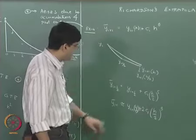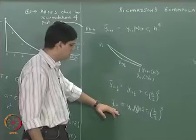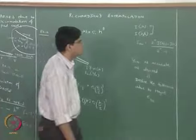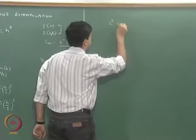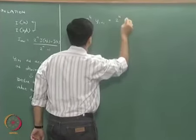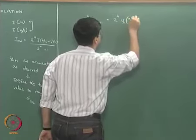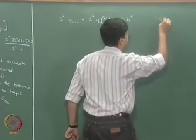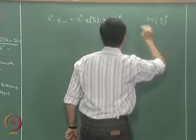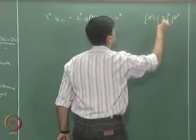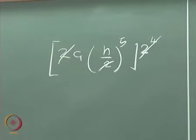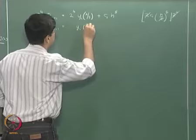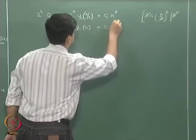As we had done before, we multiply the two-step equation by 2^4 — not 2^5, but 2^4 — just as we had done in the integration method, and then subtract the one-step equation from it. We get: 2^4 * y(i+1) bar equals 2^4 * y(i+1)(h/2) plus 2 times c1*(h/2)^5. When we multiply by 2^4, all the c1*h^5 terms cancel and we are left with y(i+1) bar equals y(i+1)(h) plus c1*h^5.